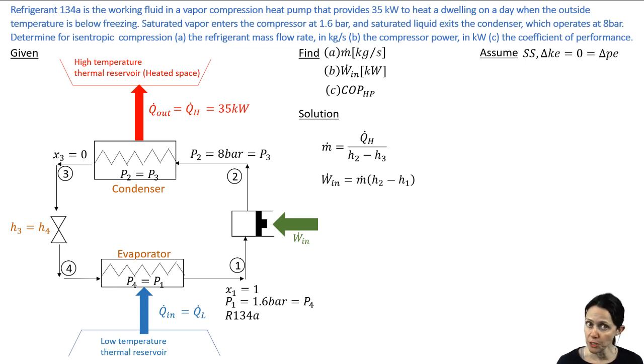My Ẇ_in - do an energy balance on your compressor. So it's going to be ṁ times H_2 minus H_1, and once you've got ṁ, you can figure out what your power input is.